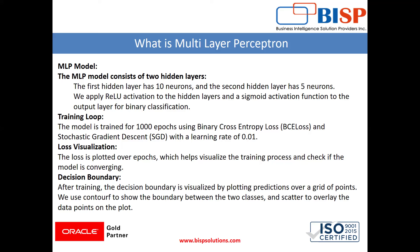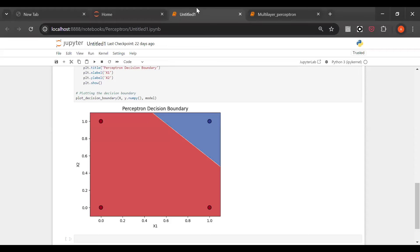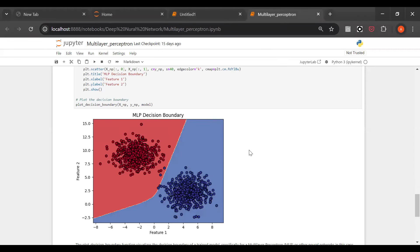The decision boundary after training is visualized by plotting the prediction image over a grid of points. We use contour plots to show the boundary between two classes. Look at this — this is our normal perceptron: the perceptron decision boundary here is a straight line. But in multilayer perceptron it's not a straight line.